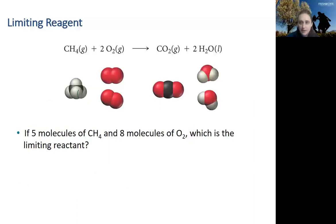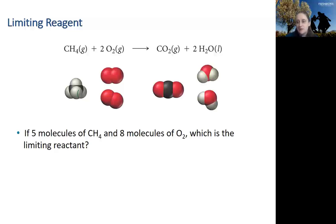Now let's look at a more chemical example. We have the simple reaction of methane reacting with oxygen to form CO₂ and water. The first step is always to check that your reaction is balanced, which this one is. We can then assess a limiting reagent given some amount of starting materials. In this case, we're told we have five molecules of methane and eight molecules of O₂. Which of these is going to limit the amount of products we can form? We can look at either product — I'll choose CO₂.